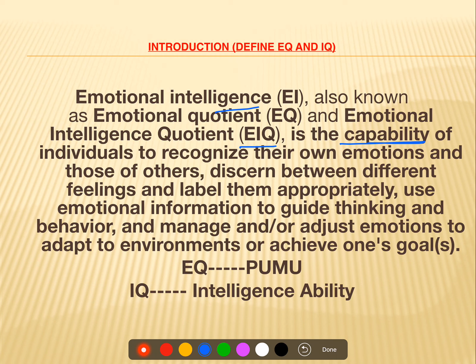EQ, also known as emotional intelligence or EIQ, is the capability of individuals to recognize your own emotions and the emotions of others. You then discern and differentiate them, labeling them appropriately — this emotion means this. Then you actually use that emotional information to guide thinking and behavior. IQ is something related to thinking from the brain.